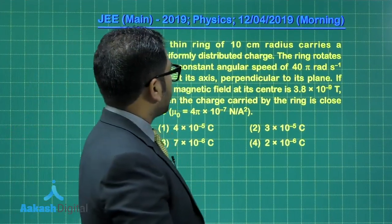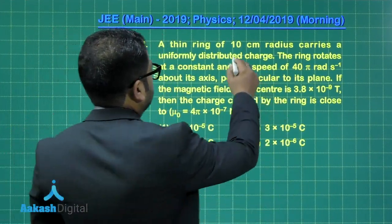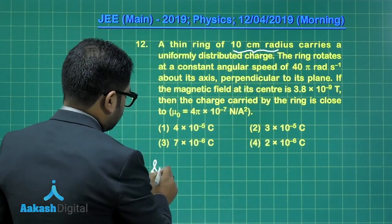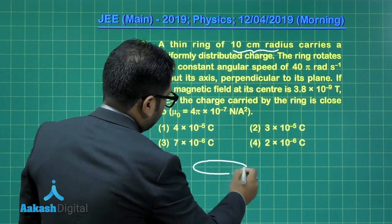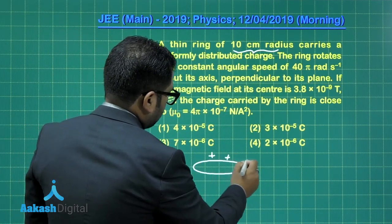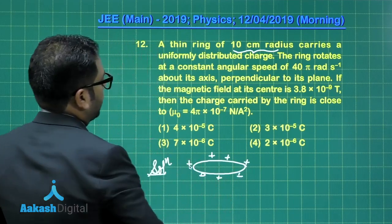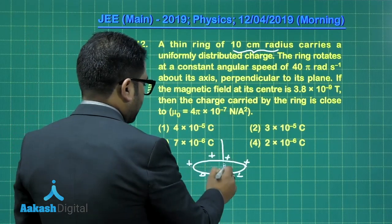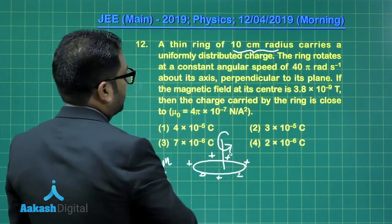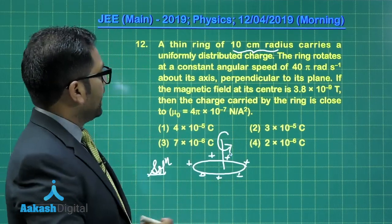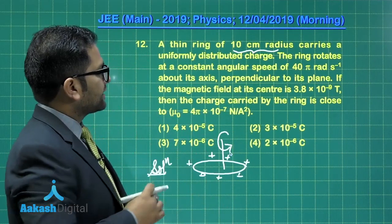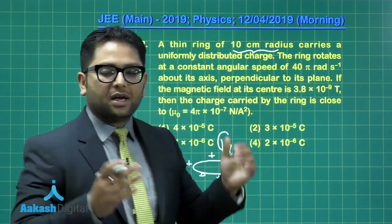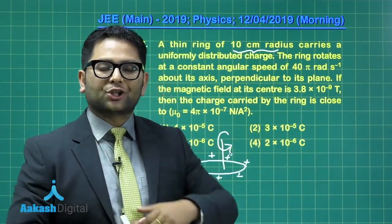Question 12 - a thin ring of radius 10 centimeter carries a uniformly distributed charge. The charge is there and the radius is there. This thing is revolving with a constant angular velocity, and that omega is 40 pi radian per second. This produces the magnetic field at the center given by 3.8 into 10 raised to the power minus 9. Based on this data, we need to calculate the charge on the ring.